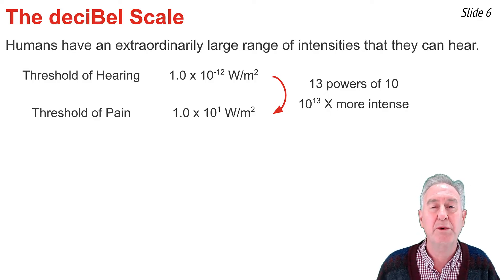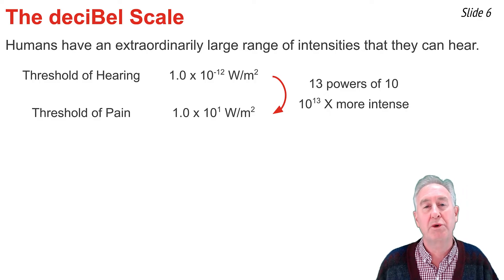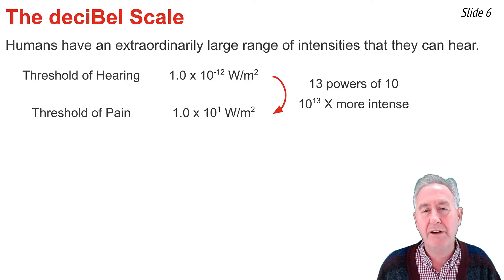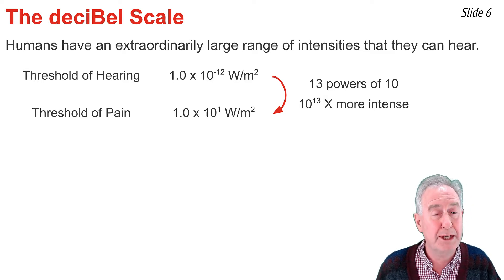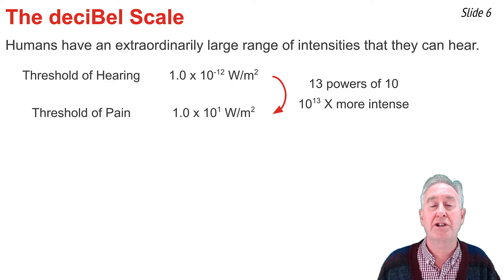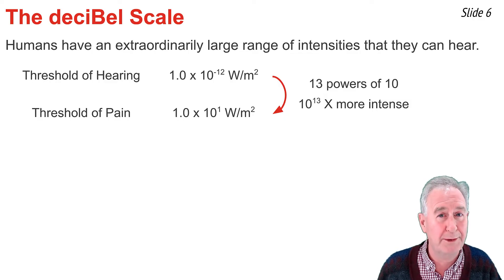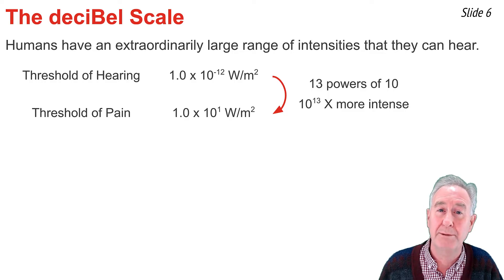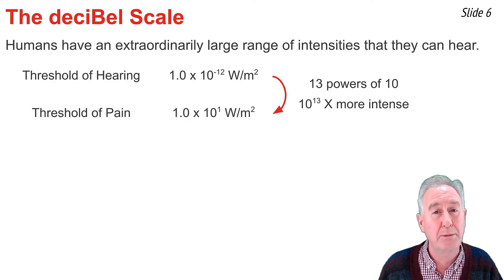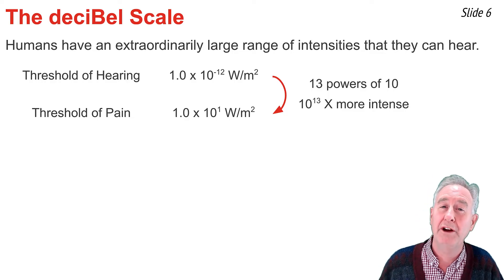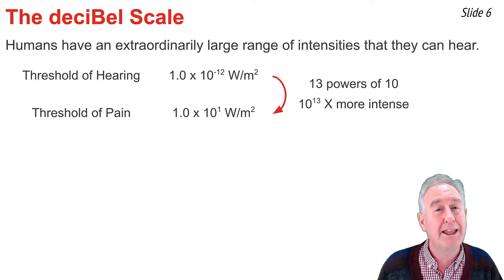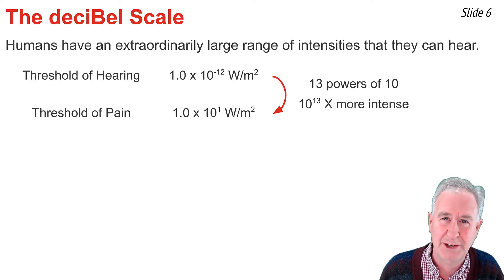In science, whenever we have a large range of values for a given quantity, we often use a logarithmic scale to compare the various values within the range. We do this in geology with the Richter scale, in chemistry with the pH scale, and here in physics with the so-called decibel scale.